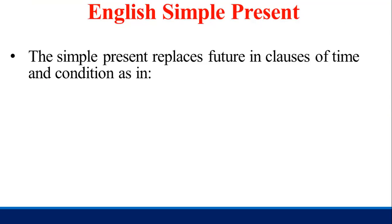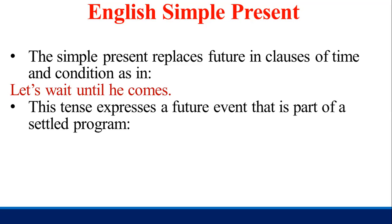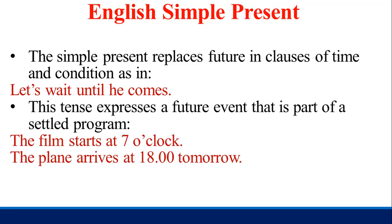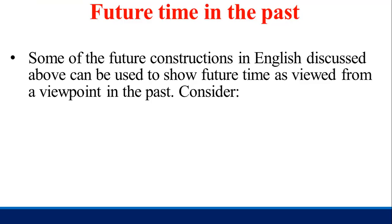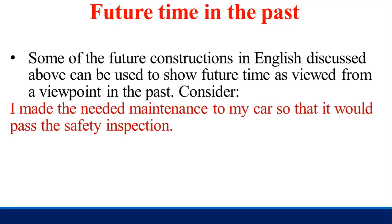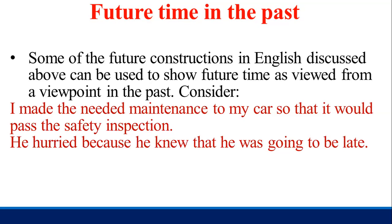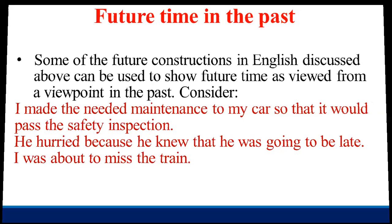The simple present replaces the future in clauses of time and condition, as in 'Let's wait until he comes.' This tense expresses a future event that is part of a settled program: 'The film starts at 7 o'clock'; 'The plane arrives at 8:06 tomorrow.' For future time in the past, some future constructions can show future time viewed from a viewpoint in the past: 'I made the needed maintenance to my car so that it would pass the safety inspection'; 'He hurried because he knew that he was going to be late'; 'I was about to miss the train.'